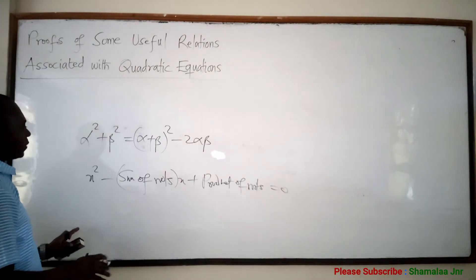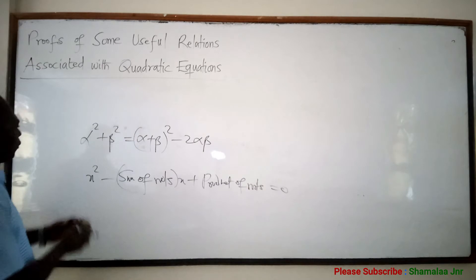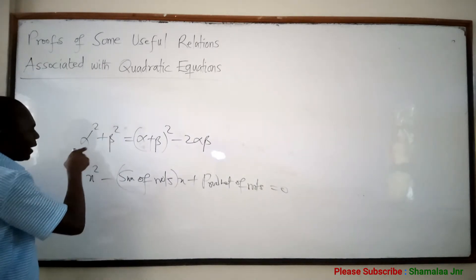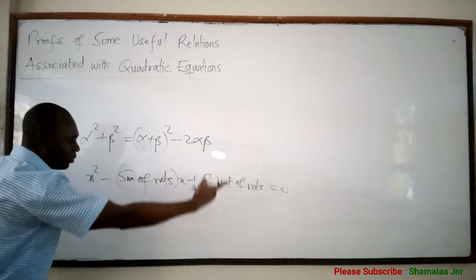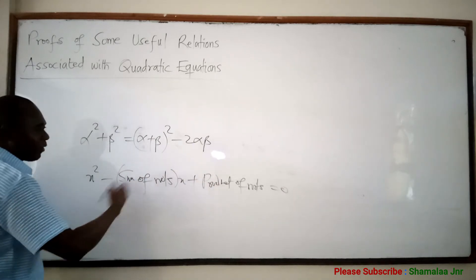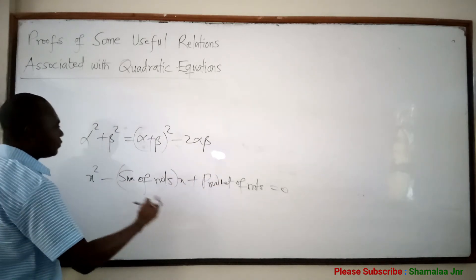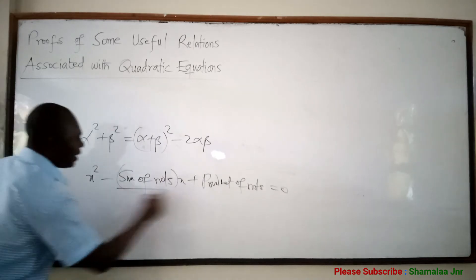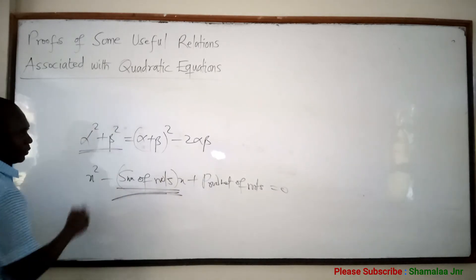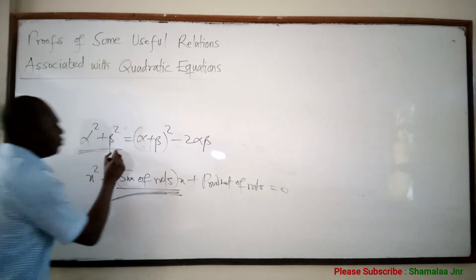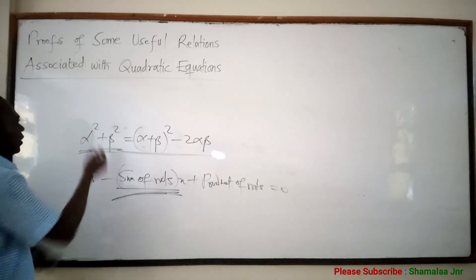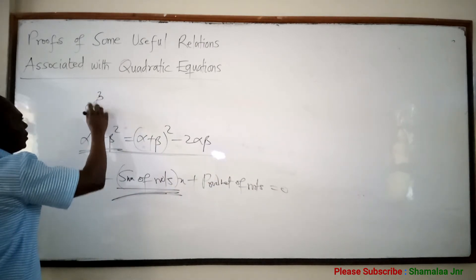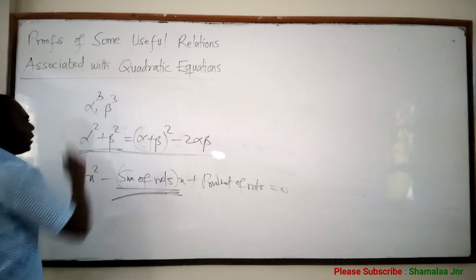So it means that if you are given a question where alpha and beta are the roots of a given quadratic equation and asked to form a quadratic equation whose roots are alpha squared and beta squared, when you are looking at the sum of roots this identity will be needed. Similarly, if they say form a quadratic equation whose roots are alpha cubed and beta cubed, you should be able to write the corresponding identity.